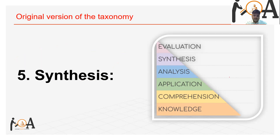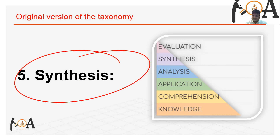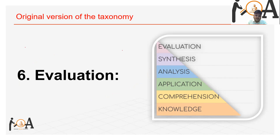The fifth level is Synthesis. Synthesis involves building a structure or pattern from diverse elements — putting parts together to form a whole. Its characteristics include production of a unique communication, production of a plan or proposed set of operations, and derivation of a set of relations. For example: if an unhealthy recipe is made from certain parts, how to convert it into something healthy — that is synthesis of knowledge.